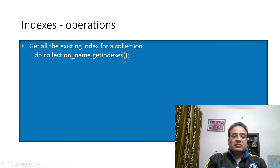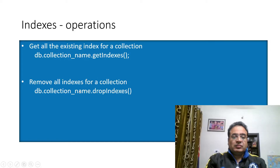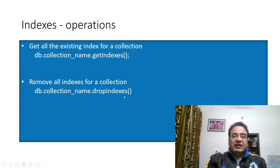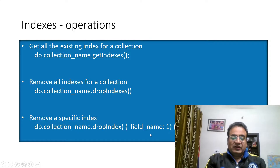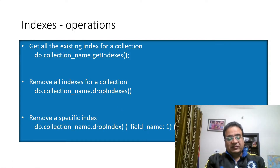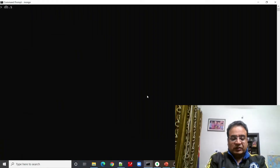To remove all indexes use db dot collection name dot dropIndexes — it will remove all indexes except the default underscore ID field index. To remove a specific index, use collection name dot dropIndex, passing the field name and the sort order, ascending or descending. This is how we can perform different operations on MongoDB indexes.